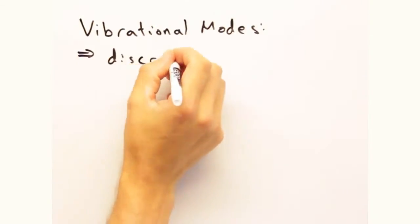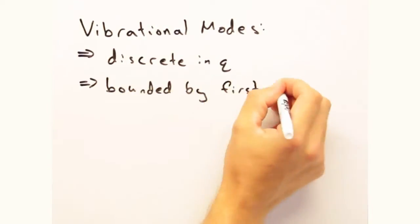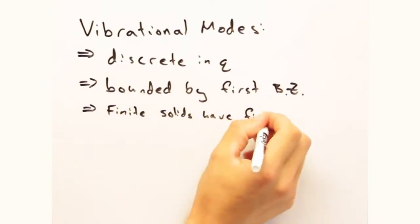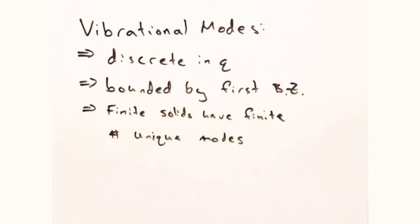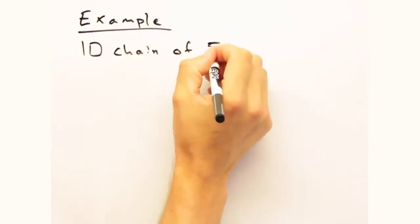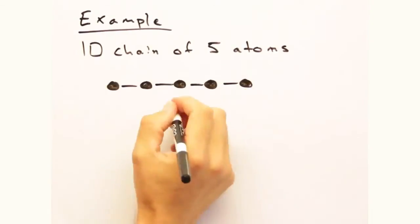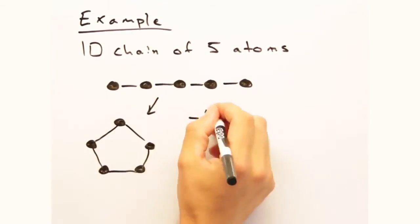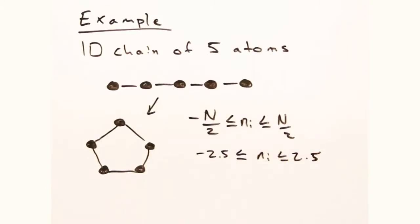With this we can conclude that vibrational modes are not only discrete and bounded by a range of values, but a finite solid can only support so many modes. As an example, let's say I have a 1D chain of 5 atoms. Because n i is an integer, it would be bounded from minus 2 to 2 with 5 modes total.